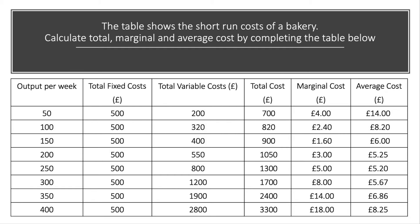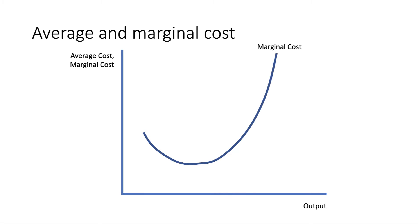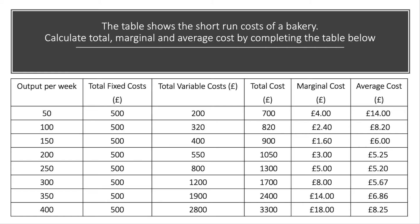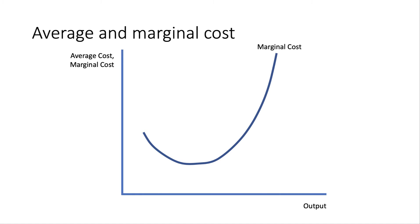We can plot this data on graph paper. Let's think about the way that marginal and average costs might change. Going back to our table, marginal cost falls, then rises quite steeply at the end. So we would normally draw the marginal cost curve in the short term as falling initially, reaching a low point, and then starting to pick up. The rise in marginal cost is mainly due to the assumption of diminishing marginal productivity as we add more variable factors to a fixed factor.